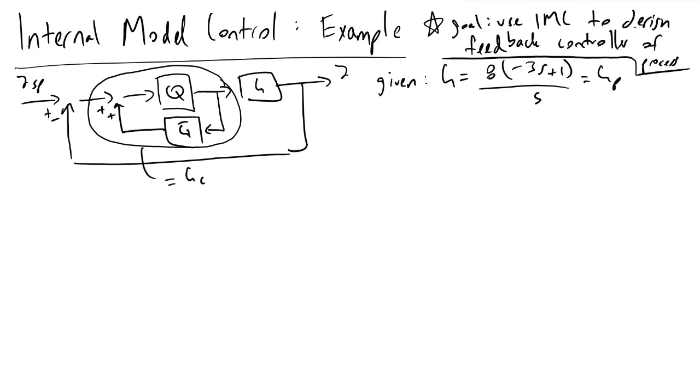And if you perform the control block diagram algebra, we will realize that GC is equal to Q, our internal model controller, divided by 1 minus G tilde, which is essentially our process transfer function times Q.